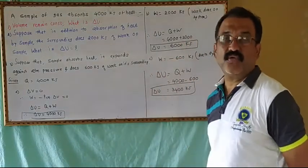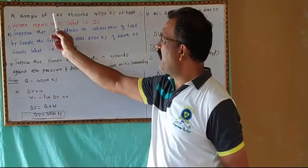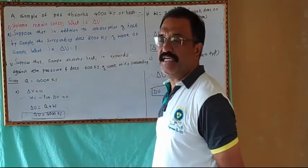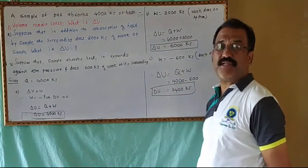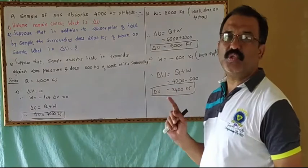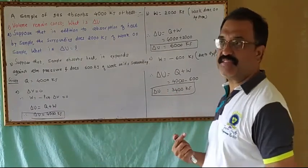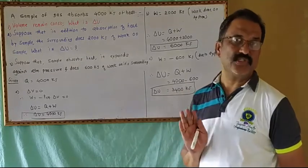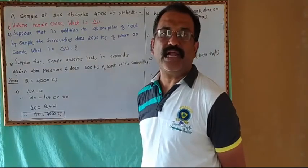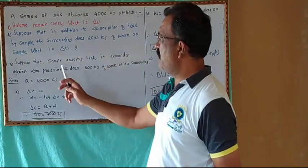Here is a problem which carries 3 marks. A sample of gas absorbs 4000 kilojoules of heat. When heat is absorbed by the system, Q has a positive sign. We have to calculate the value of ΔU when volume remains constant.